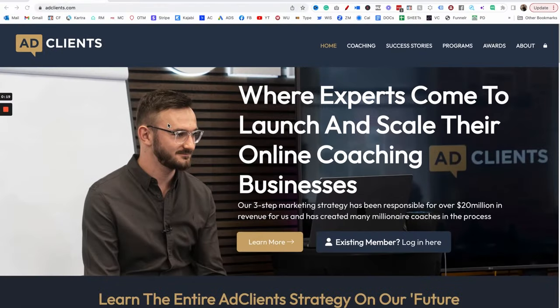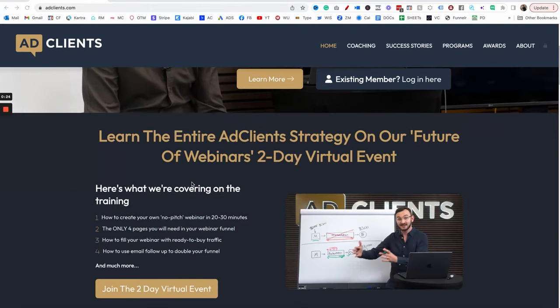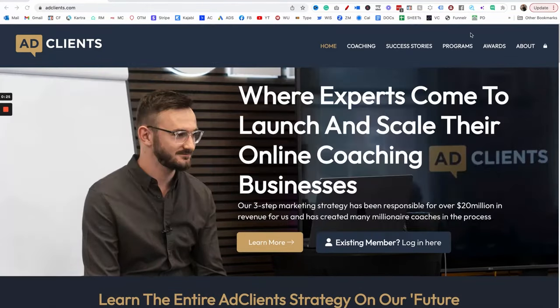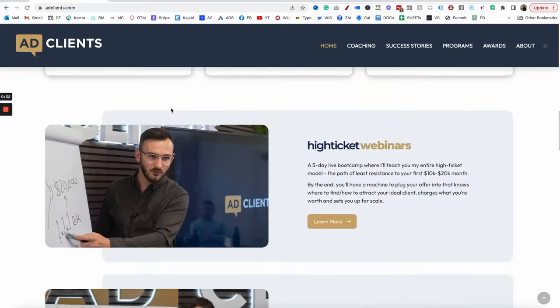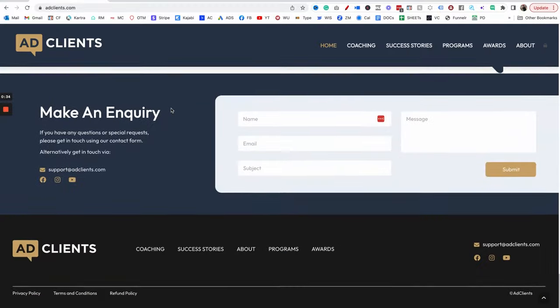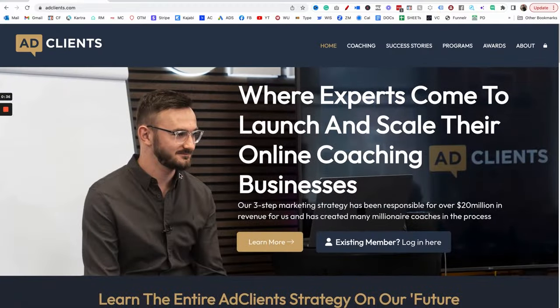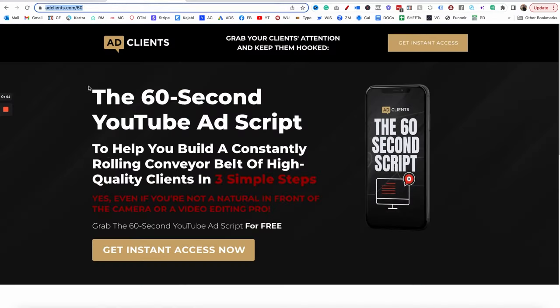So here you can see adclients.com. This is my main website, my main homepage where people can come and explore, see what we're about. They can go and click on the about page, they can hear about our programs, they can hear about our success stories and all the stuff that we've got going on. They can scroll down, we've got information on our different social media accounts and things like this. However, notice that adclients.com is obviously the name and we've got things like this.